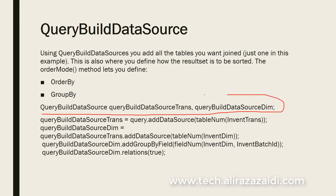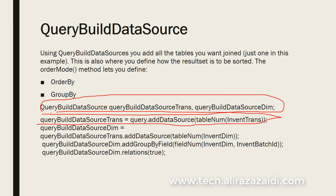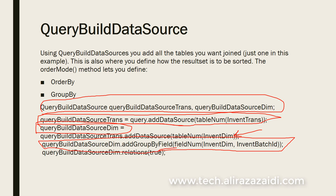If we explore the code snippet, we define two data sources: transaction and dimensions. For the first transaction data source, we add the InventTrans table to the query. Then from the transaction data source, we initialize another data source and define the InventDim table. That data source must be a child of the transaction data source. We then add a group by field in the dimension data source, based on InventDim and InventBatch.